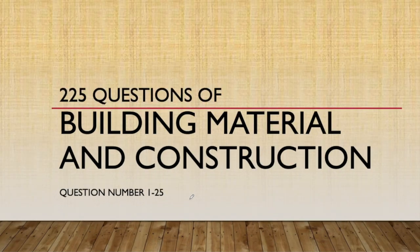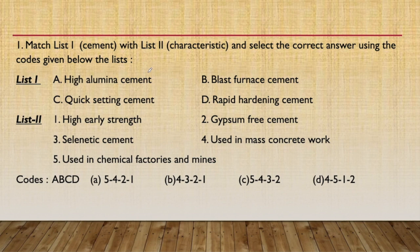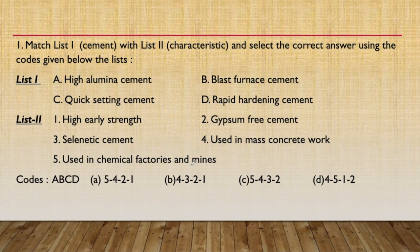The first question asks to match List 1 with List 2 on cement and their characteristics. List 1 has four cements: high alumina cement, blast furnace cement, quick setting cement, and rapid hardening cement. List 2 characteristics are: high early strength, gypsum free cement, selenitic cement used in mass concrete work, and used in chemical factories and mines. For high alumina cement, it is sulphate resisting, so it is used in chemical factories and mines.